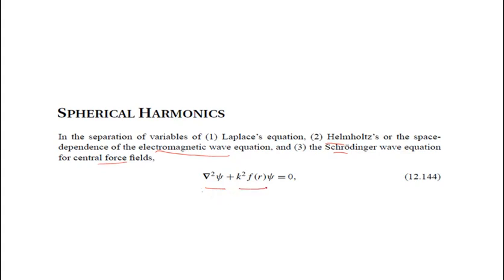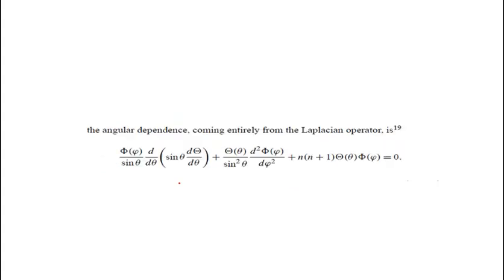The equation is: del-squared psi plus k-squared f(r) psi equals zero. The del-squared is the Laplacian operator, and the angular part comes entirely from the Laplacian. The angular dependence equation takes the form: (Φ/sinθ)(d/dθ)(sinθ · dΘ/dθ) + (Θ/sin²θ)(d²Φ/dφ²) + n(n+1)ΘΦ = 0.